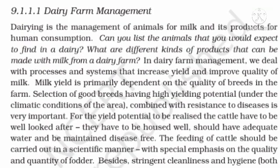Dairy Farm Management. Dairying is the management of animals for milk and dairy products for human consumption. Can you list the animals that you would expect to find in a dairy? What are the different kinds of products that can be made with milk from a dairy farm? In dairy farm management, we deal with processes and systems that increase the yield and improve quality of milk.